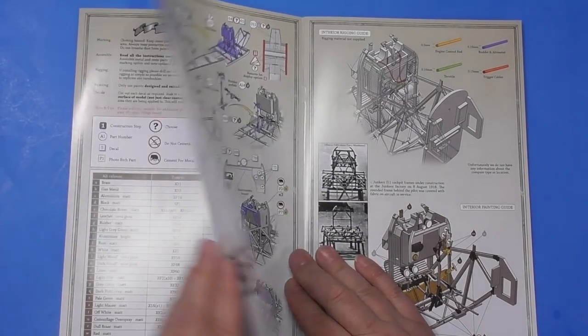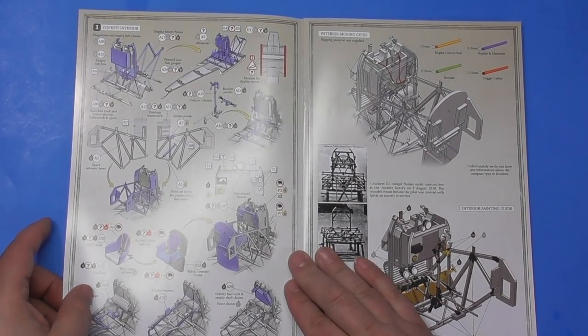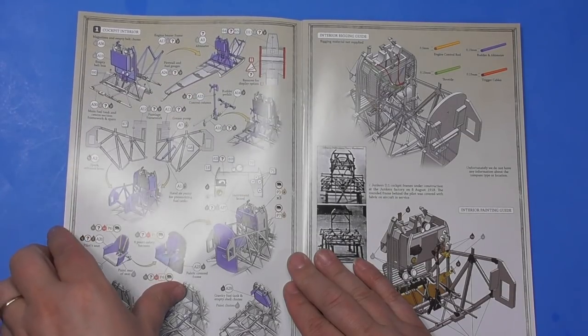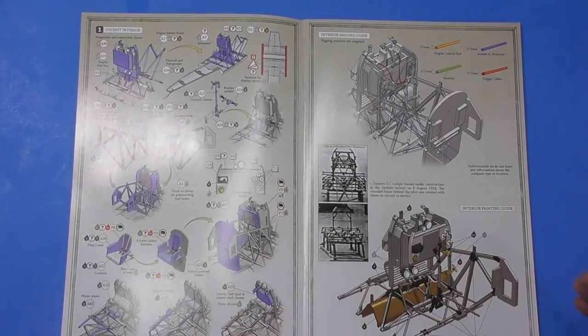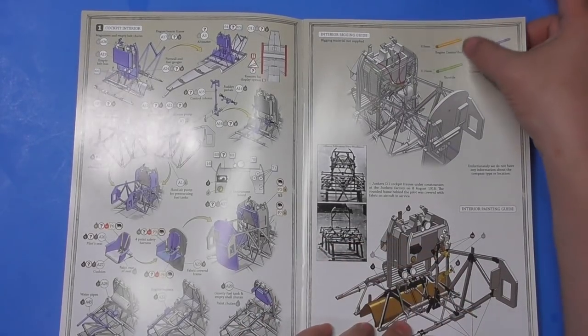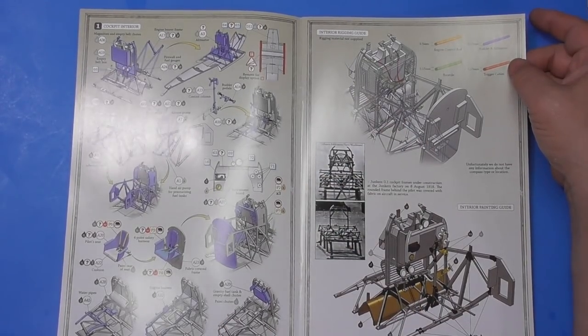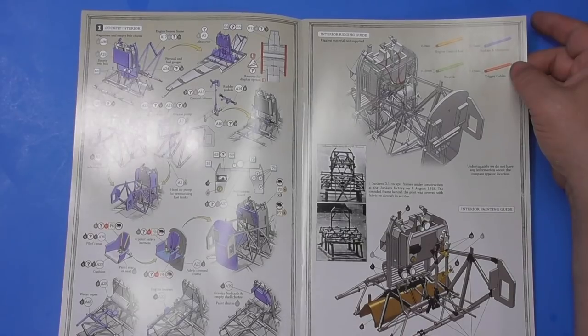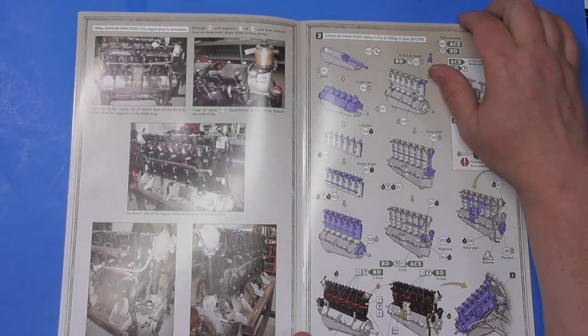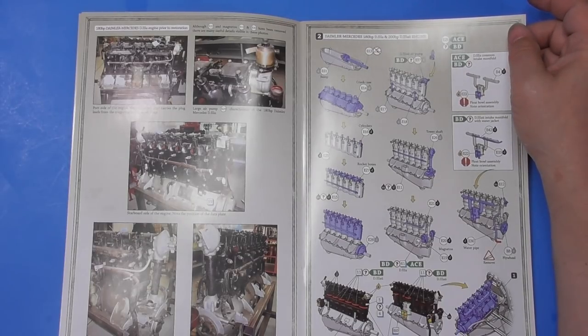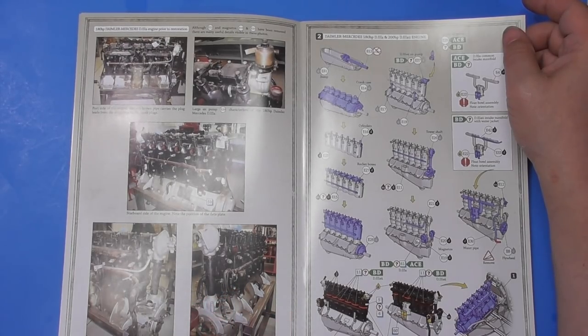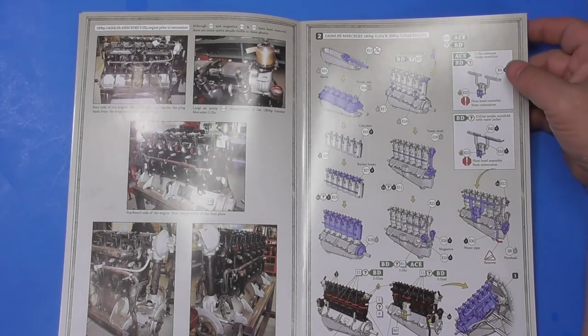Part numbers, color callouts, green, gray, and C, depending on which version you're building. So you're going to have to go through and decide which version you're going to build. Interior rigging guide, so the different cables you're going to need. And then the wiring, because there is rigging. Here's a good picture of it. Interior painting guide. This is the 180 horsepower Daimler Mercedes engine before restoration. So you can see where the spark plug wires go, water pipes go. Very nice.